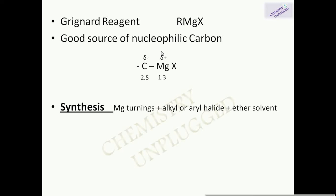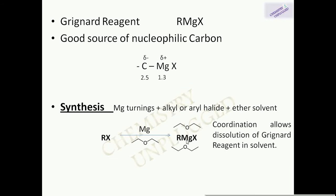To synthesize Grignard reagent, we use magnesium turnings, alkyl or aryl halides, and an ether solvent. We react RX with diethyl ether as solvent. Two molecules of diethyl ether coordinate with RMgX. The ether solvent is essential because magnesium has only four electrons in its outer shell and needs two more lone pairs to form an octet, which are provided by the ether.